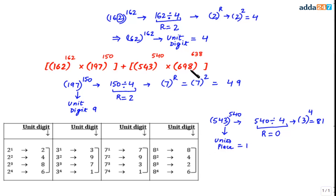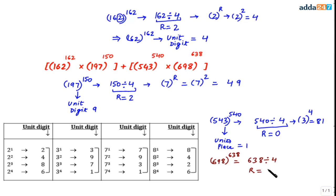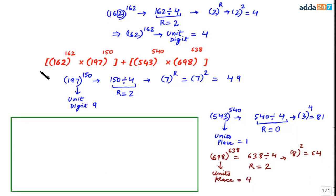Next, 698 raised to power 638. The units digit is 8. We divide 638 by 4 and get remainder 2. So we raise 8 to the power 2: 8² = 64. The units digit of 698 raised to power 638 is 4.